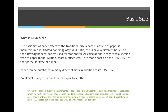First, let's define what basic size and basis weight are. The basic size refers to the traditional size a particular type of paper is manufactured in. Coated papers — which can come in gloss, dull, satin, or other types — have a different basic size than writing papers. So every time you hear the term '80 pound gloss text' or '24 pound writing paper,' that pound designation is calculated based on the basic size the paper was traditionally manufactured in. All calculations for a specific type of paper are made based on that basic size, regardless of what size you purchase it in. I can't emphasize that enough.